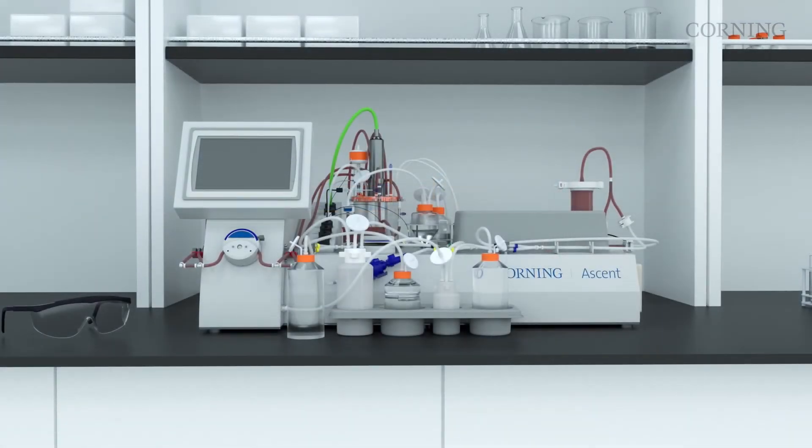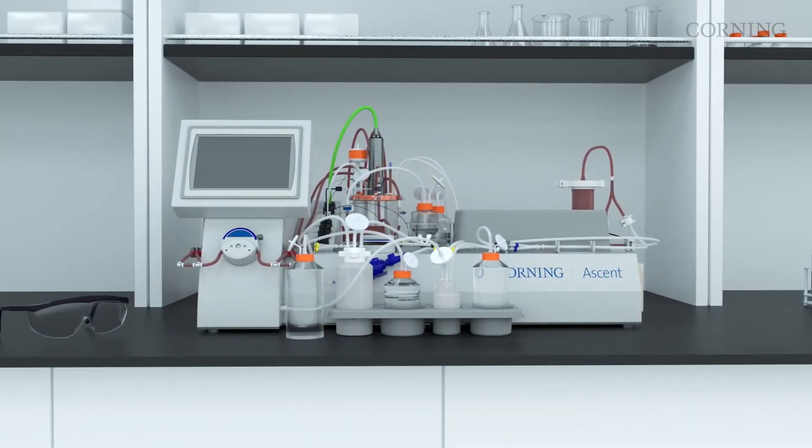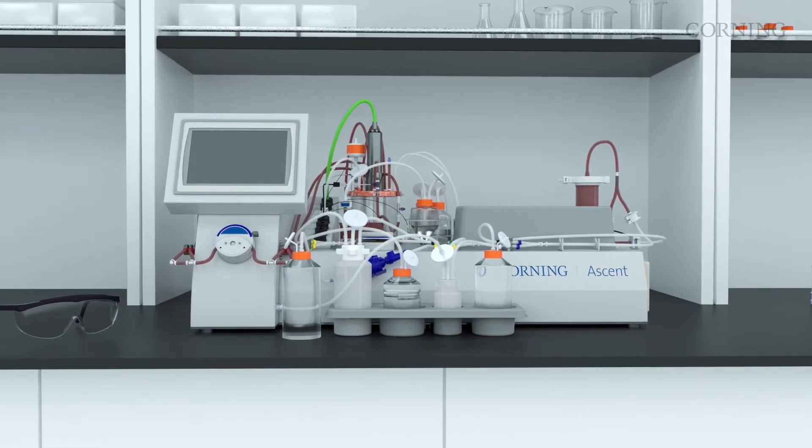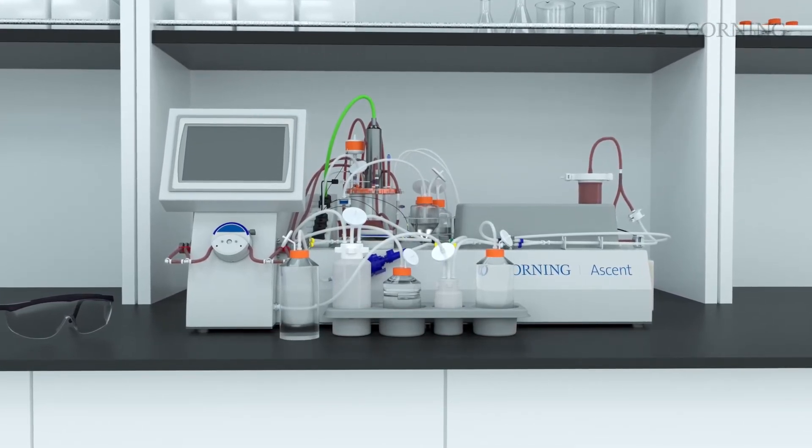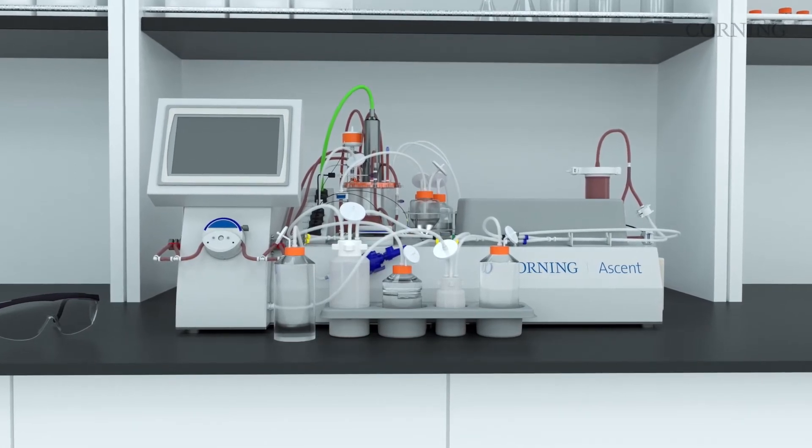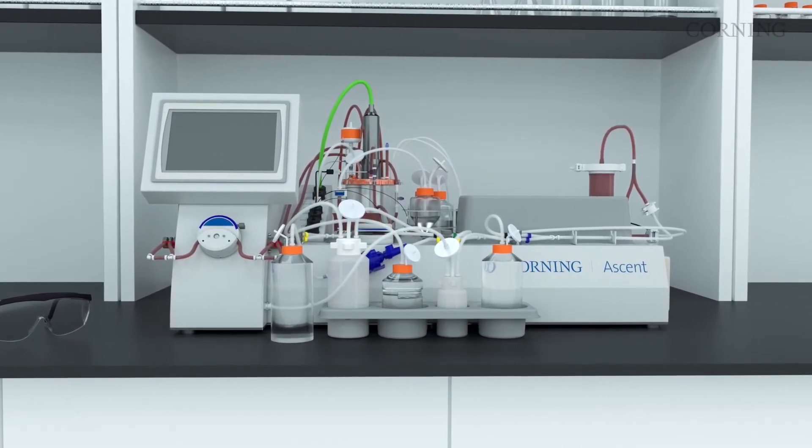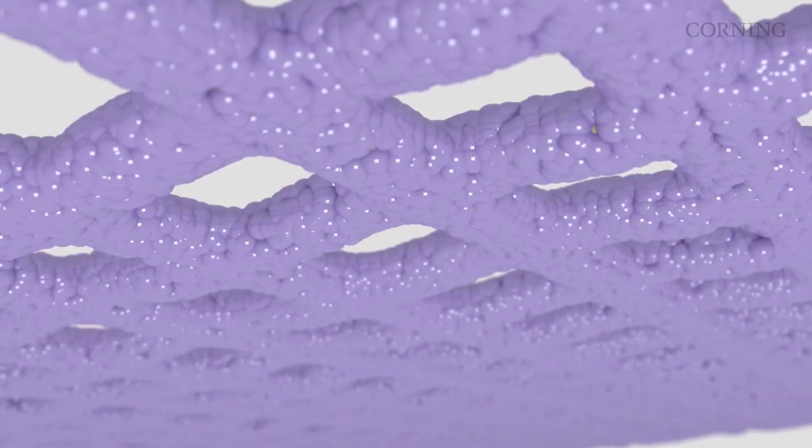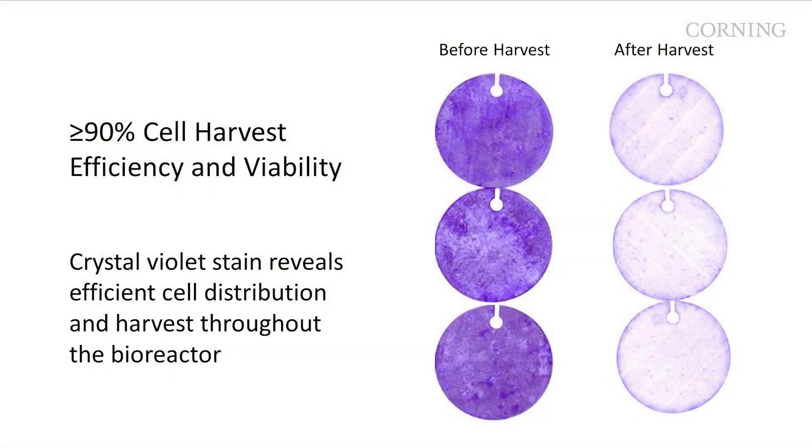The ability to harvest viable cells from the Ascend FBR enables its use in other applications such as cell therapy workflows or other biologic production as well as enabling scalability from small to large Ascend FBR vessels. This also provides the flexibility of using chemical or mechanical cell lysis methods to maximize recovery of cell-associated viral particles.